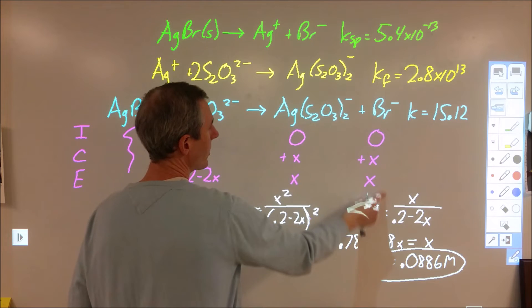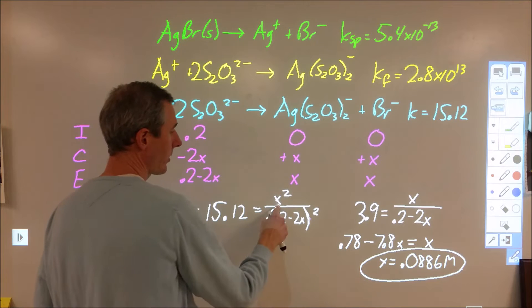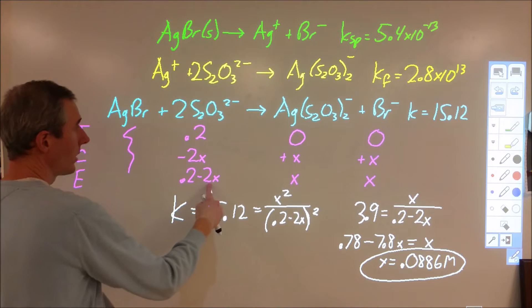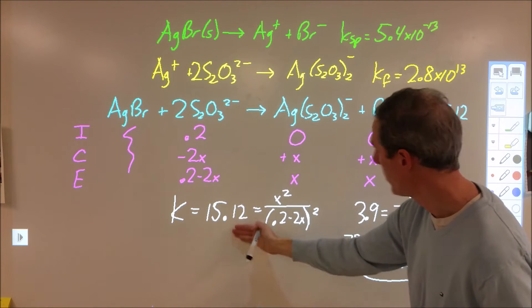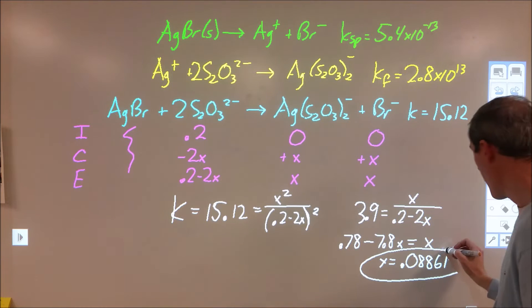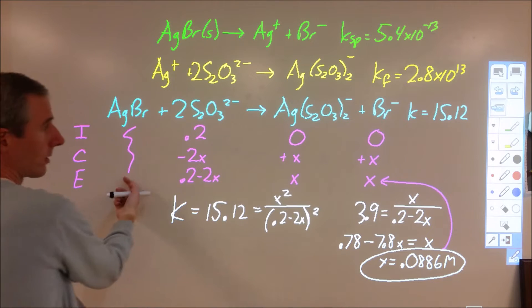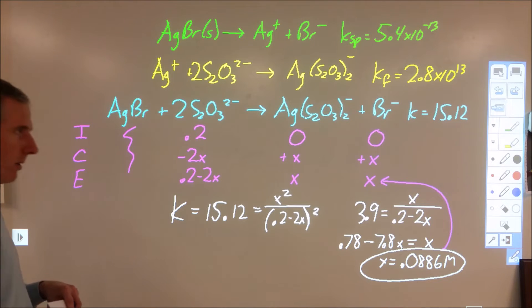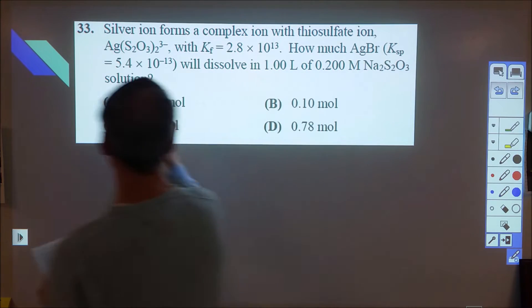We start with 0 of this, we start with 0 of this, and we end up with x of this. So we have our equilibrium constant is equal to x times x, x squared, over 0.2 minus 2x, 0.2 squared because of that 2. So we can then square root this and square root this to simplify this down, which we can then solve for x. And x ends up being 0.0886, and that x is going to be stoichiometrically proportional to this value. And so therefore that tells us how much silver bromide dissolves, so we can go back and we can select answer.